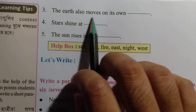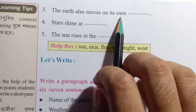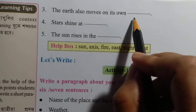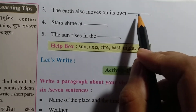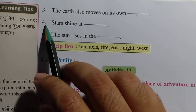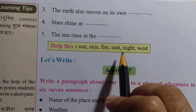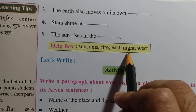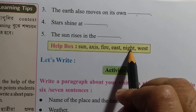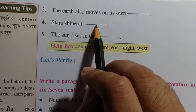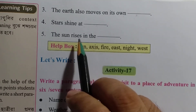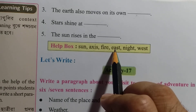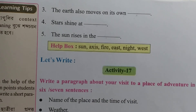The Earth also moves on its own axis. This movement is called rotation on its axis. Because of this, we have day and night. The sun rises and sets as the Earth rotates.